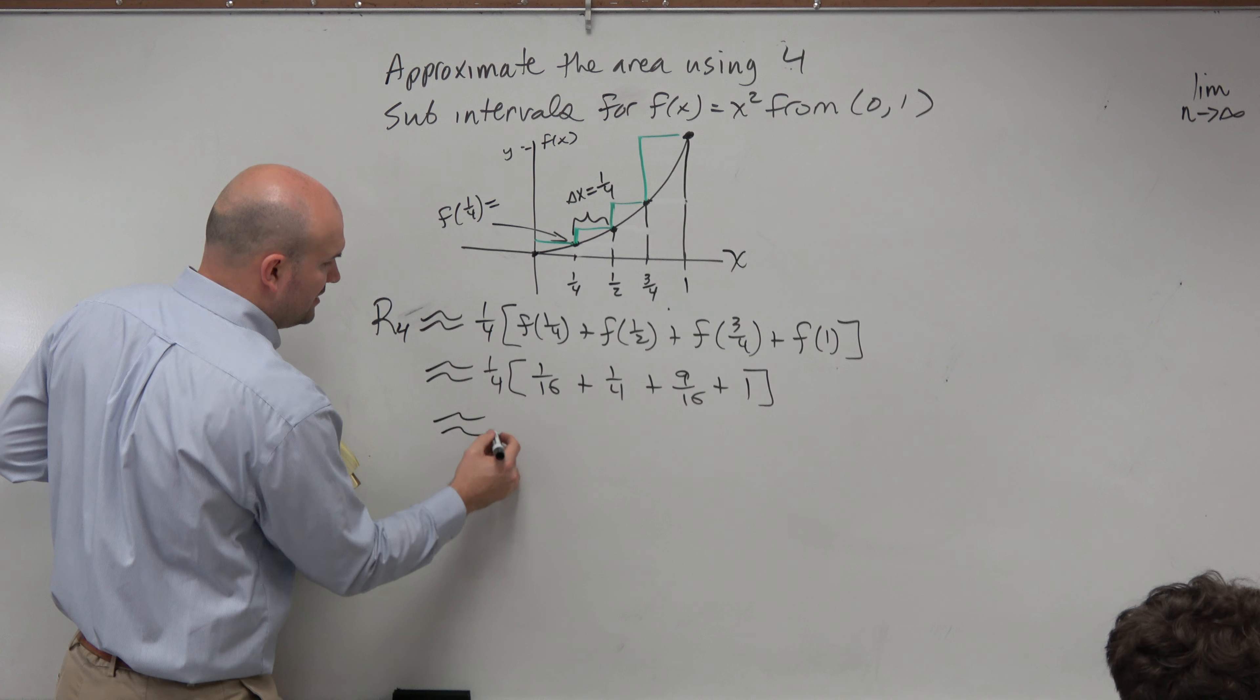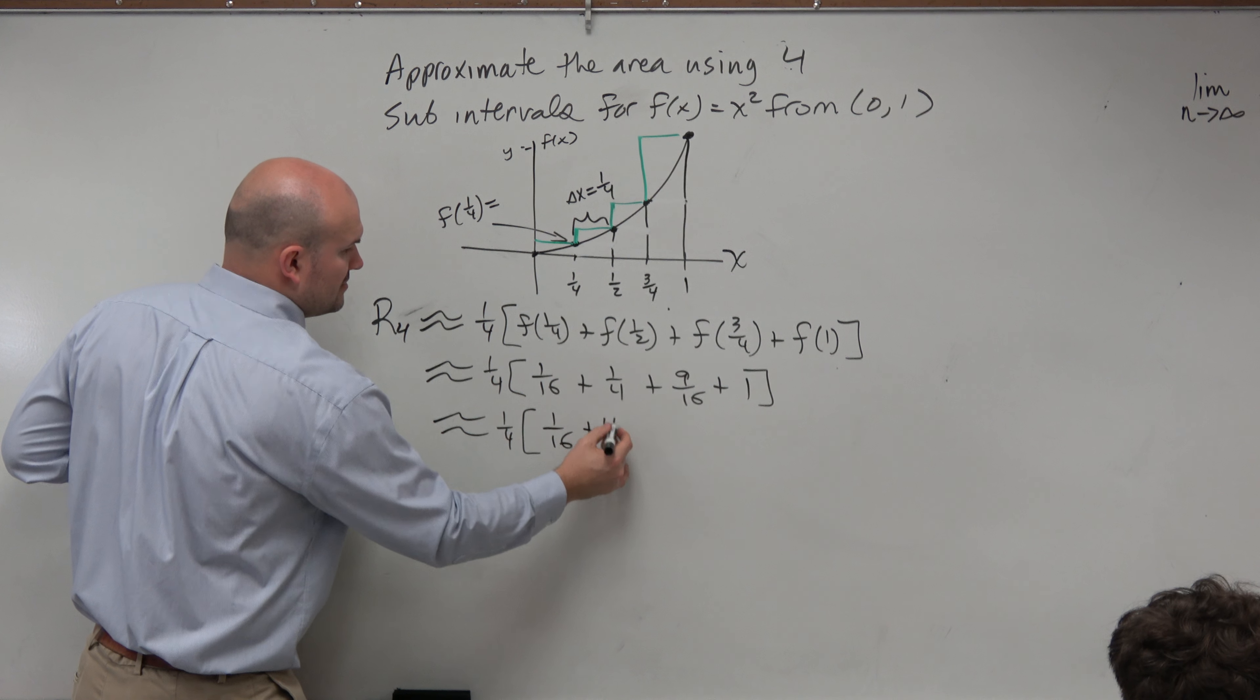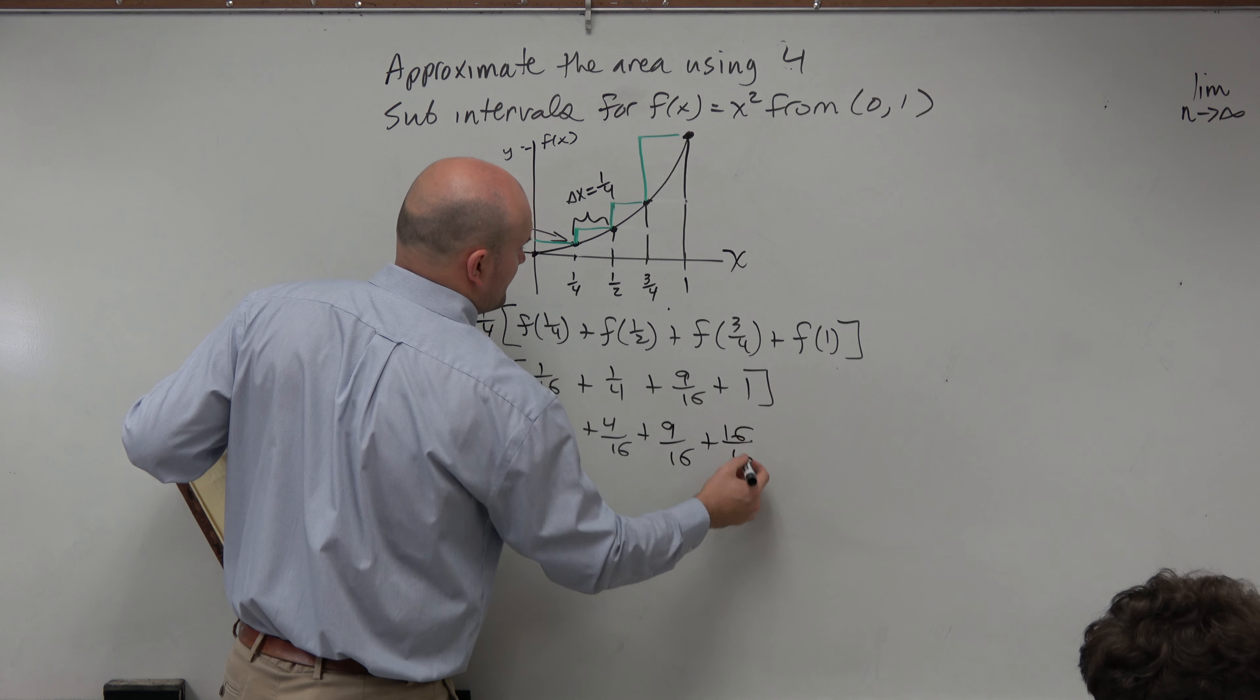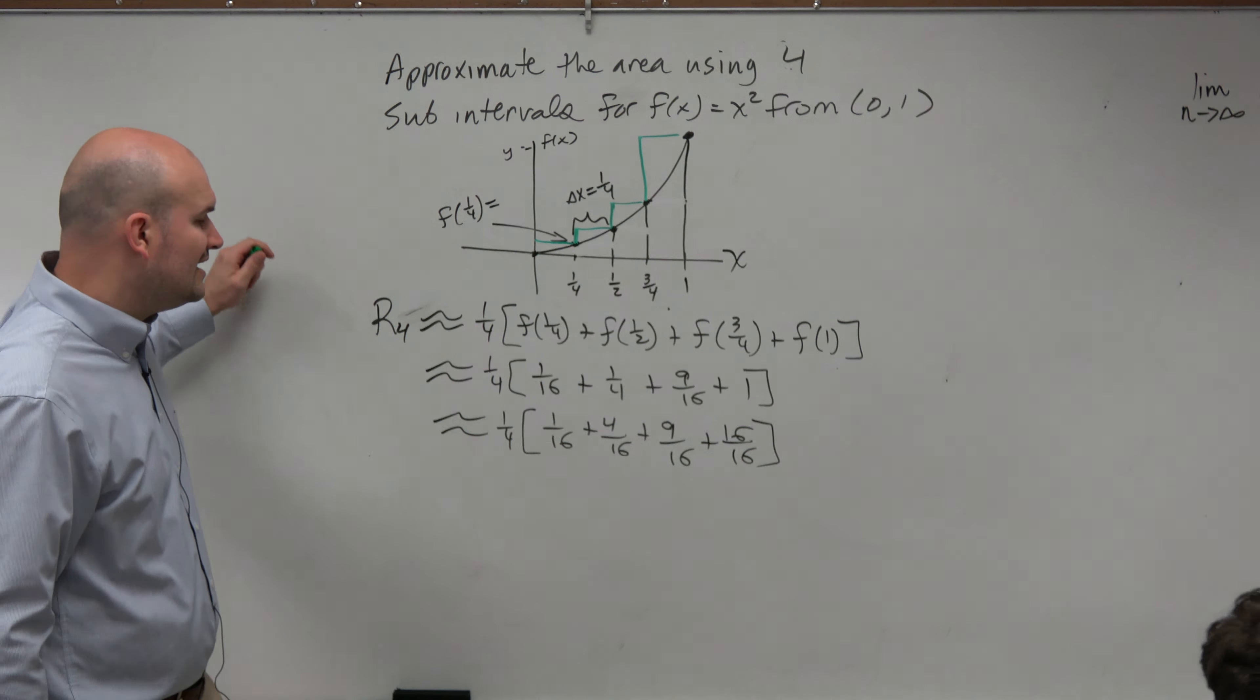Now, now we just need to calculate this. So again, let's just write them in terms of 16ths. And let's see, we have 5, 14, no, 25, 29, 30, 1/4th.